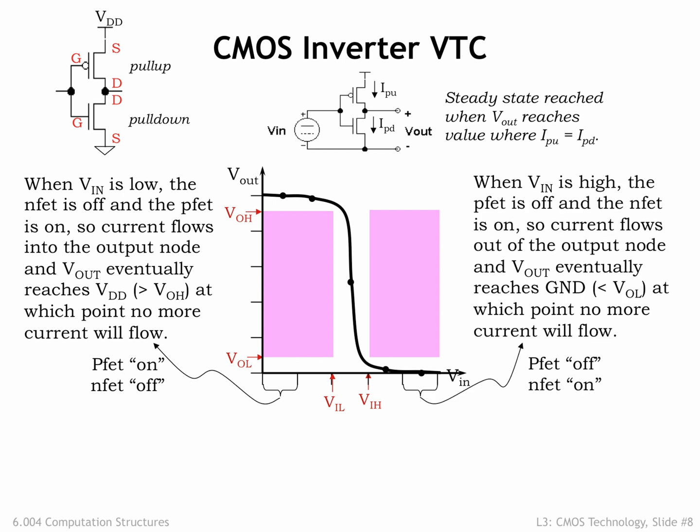Similarly, when VIN is a digital 1, the NFET switch is on and PFET switch is off, so the output is connected to ground and eventually reaches a voltage of 0 V. Again, current flow through the pull-down switch will cease once the output node reaches 0 V.